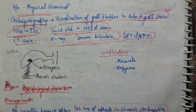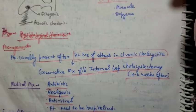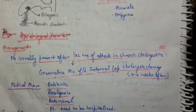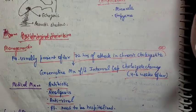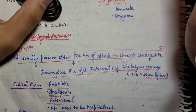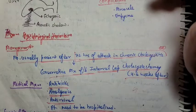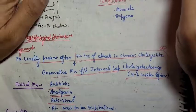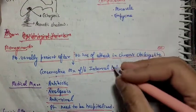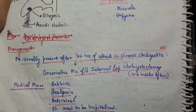Regarding complications, these include mucocele and empyema. Usually, patients present after 72 hours of an attack in chronic cholecystitis. The management in such cases is conservative management followed by interval laparoscopic cholecystectomy, with an interval of 6 weeks after the acute attack.